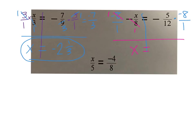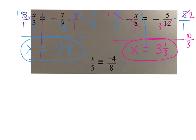On the right, I would try cross-simplifying. 8 and 12 are both divisible by 4 — 8 divided by 4 leaves me 2, and 12 divided by 4 leaves me 3. Now when I multiply: 5 times 2 is 10, 3 times 1 is 3. It was a negative times a negative, so that's a positive 10 thirds. Then I simplify — 3 comes out of 10 three times with 1 left over, so x equals 3 and 1 third.